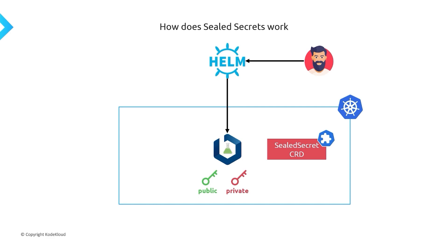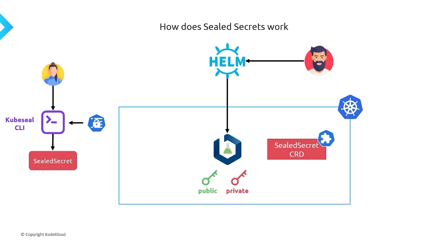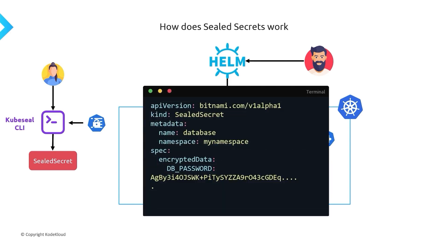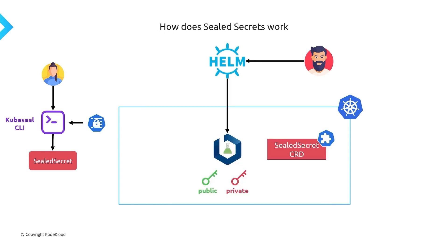Now it's a matter of how exactly do we encrypt our secrets. Let's say we have a secret — we're going to utilize the kubeseal CLI and pass in a regular Kubernetes secret. By utilizing the public key generated by the operator, we can encrypt it and create a sealed secret object. Remember, this is the custom resource definition created by the operator, so this is a brand new Kubernetes object that represents an encrypted secret. We can then apply it like any other object with a kubectl apply, and that's going to create the sealed secret object in our Kubernetes cluster.